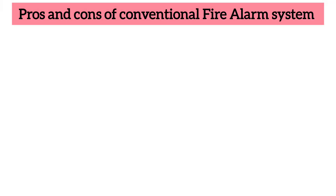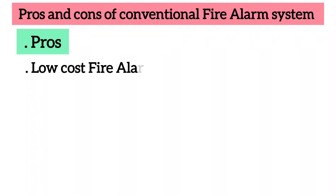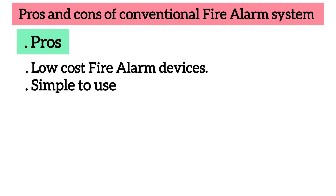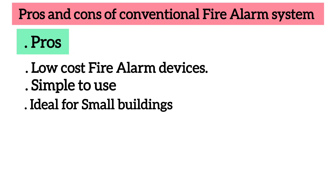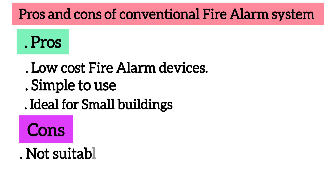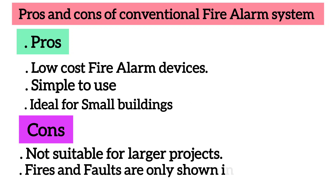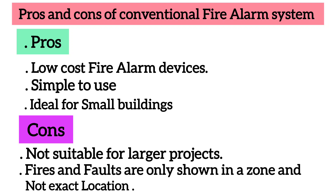Pros and cons of conventional fire alarm system. Pros: 1. Low-cost fire alarm devices. 2. Simple to use. 3. Ideal for small buildings. Cons: 1. Not suitable for larger projects. 2. Fires and faults are only shown in a zone and not the exact location.